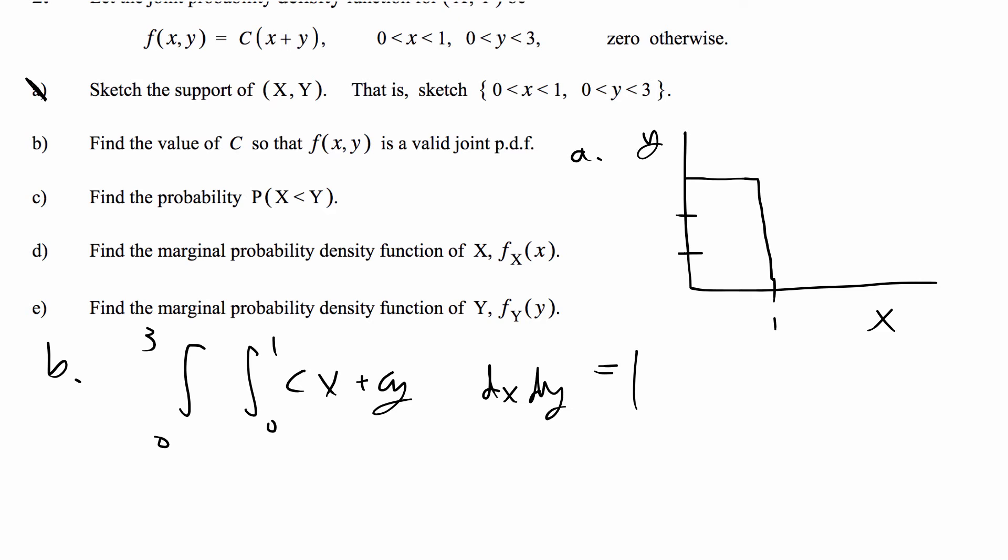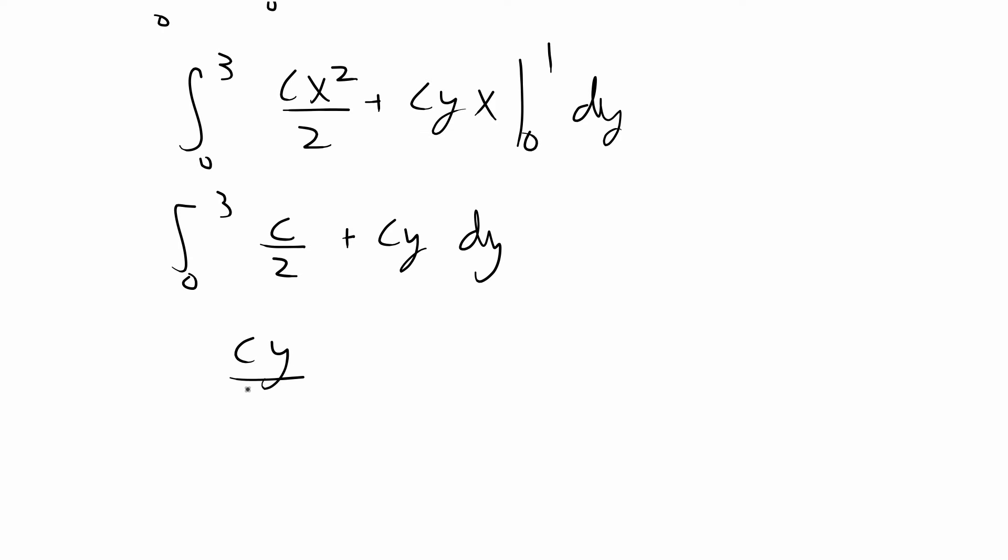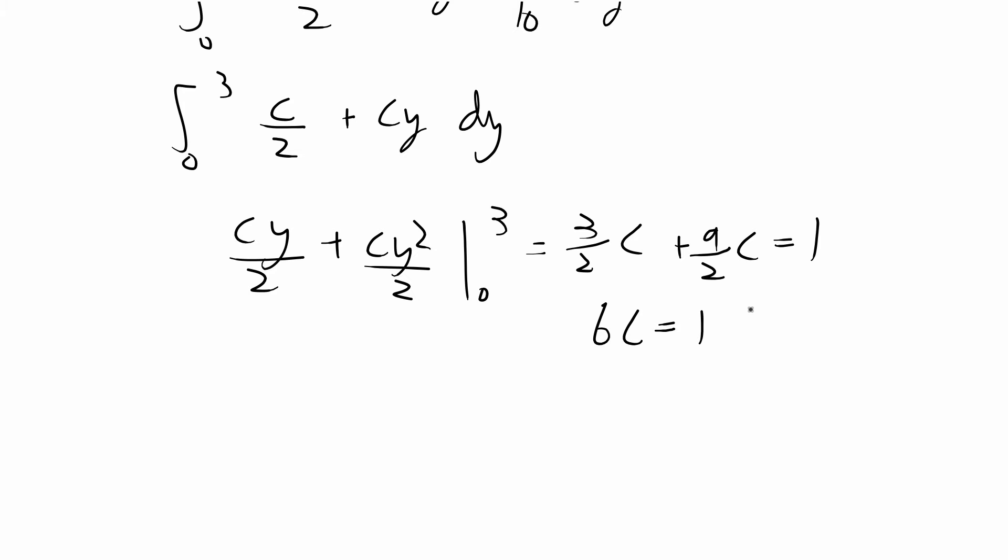I went ahead and distributed the C to the parentheses inside. Let's integrate X first. That's going to be Cx²/2 + CYX from 0 to 1, dy. We're going to plug in 1 so that's going to give C/2 + CY and then we still have to do the outer integral. When we do that, we're going to get CY/2 + CY²/2 integrated from 0 to 3 and we get 3C/2 + 9C/2 equal to 1. That's going to give us 6C equals 1 which gives us C equals 1/6.